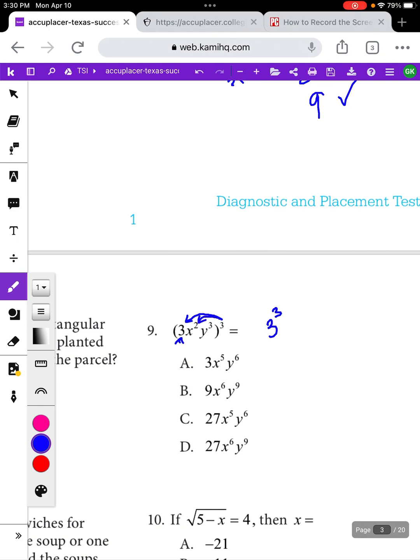This 3 that was at the beginning doesn't have a power written, that's an understood power of 1. So when you distribute the little 3, you end up with a power of 3. Next we distribute it to x squared. When we distribute the power of 3 to x squared, we end up with x to the power of 6. We multiply the powers together. And then last we have y to the power of 3. If we distribute a power of 3 to that, we end up with y to the power of 9.